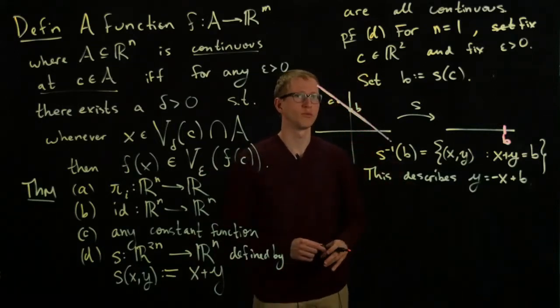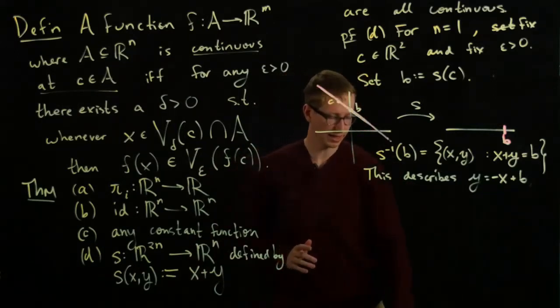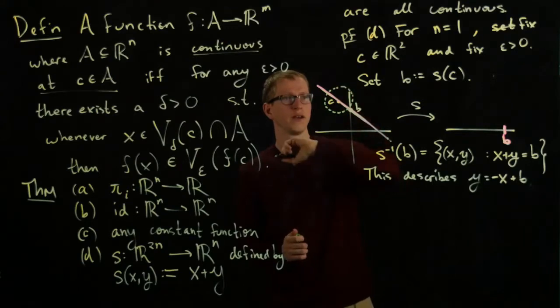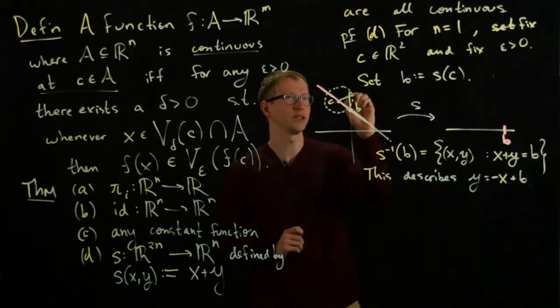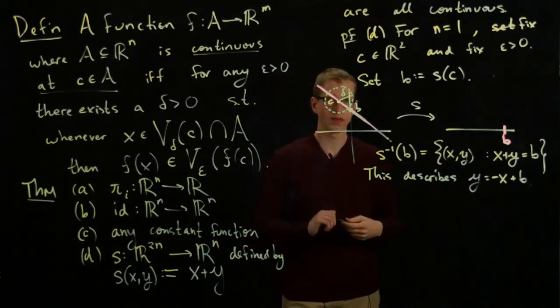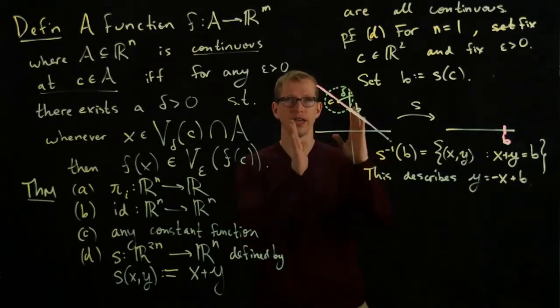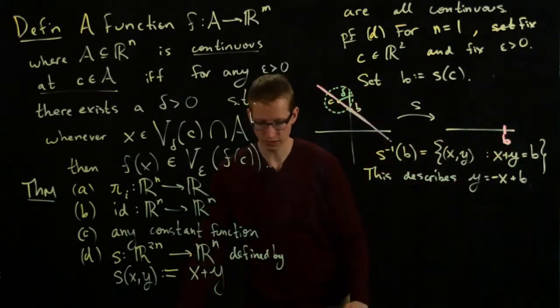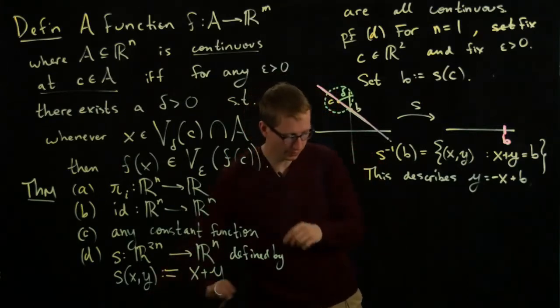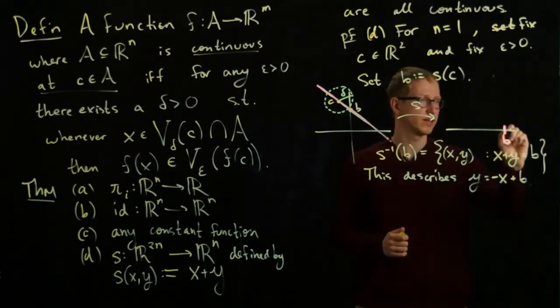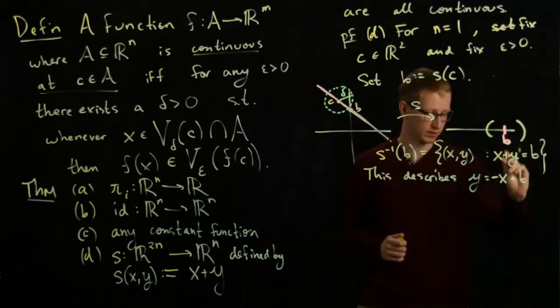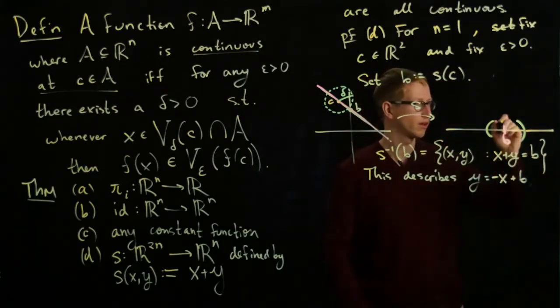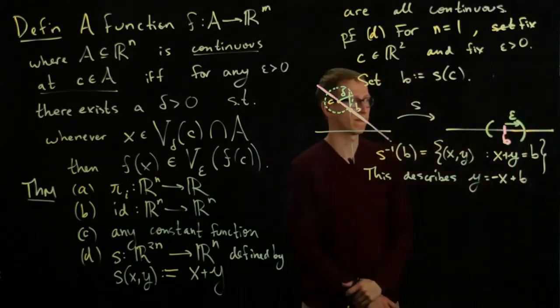Now what we want to do is we want to find a neighborhood around c for some delta I haven't yet figured out. Here's going to be what delta is. Whose image under the function S gets mapped to the epsilon neighborhood around b. So we fixed epsilon, and let me draw epsilon here. So let's say epsilon is, let's say this large, let me extend this out a little bit further. This is length epsilon in both directions.